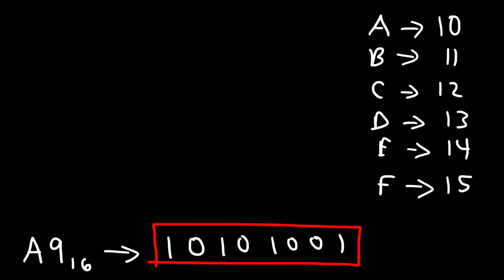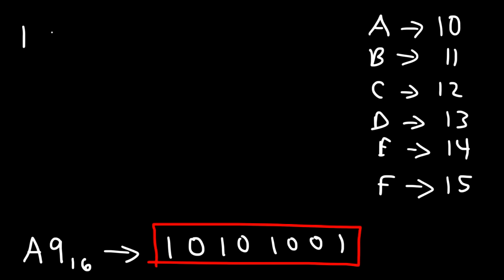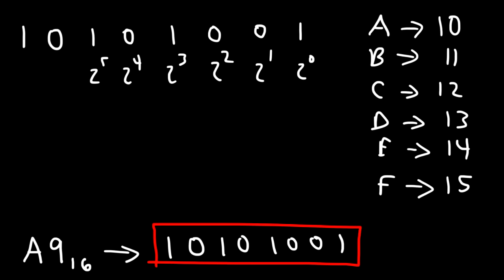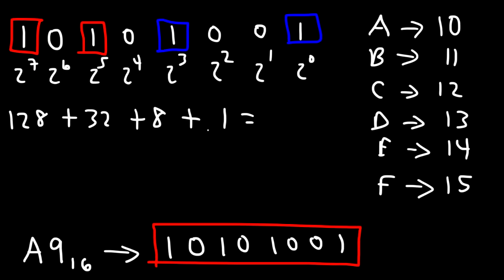Just to make sure we have the right answer, let's convert each number into a decimal value. Converting the binary number 10101001: we multiply each bit by the corresponding power of 2. We have 1 times 2 to the 7th, which is 128, plus 1 times 2 to the 5th, which is 32, plus 2 to the 3rd, which is 8, plus 2 to the 0, which is 1. So 128 plus 32 plus 8 plus 1 gives us 169.